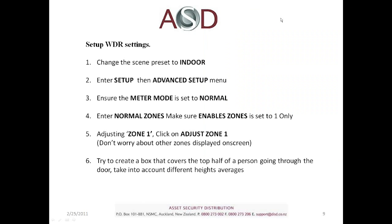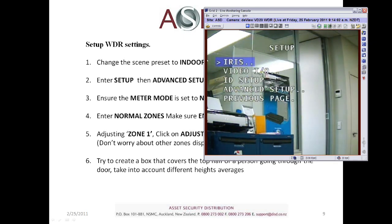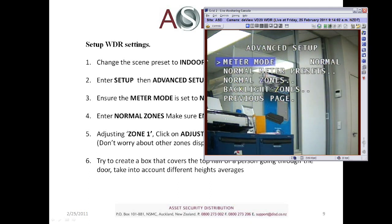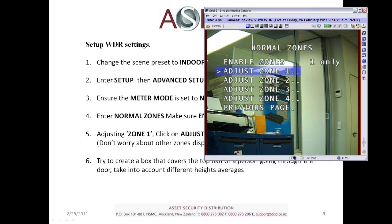Now we'll go through how to set up the actual WDR settings. First, make sure the scene preset is set to Indoor. Then go to Setup, then Advanced Setup. Ensure that Meter Mode is set to Normal. Come down to Normal Zones and click enter. Make sure Enable Zones is set to one only — by default it's set to two, so change that to one. Then come down and adjust Zone One.